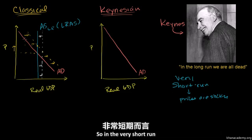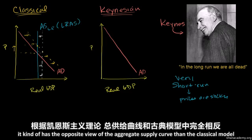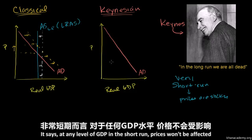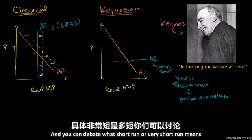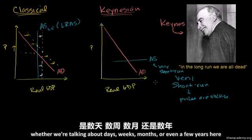So in the very short run, it has the opposite view of the aggregate supply curve from the classical model. It says at any level of GDP in the short run, prices won't be affected. So in this model, this is aggregate supply in the very short run — and you can debate what 'very short run' means, whether we're talking days, weeks, months, or even a few years.